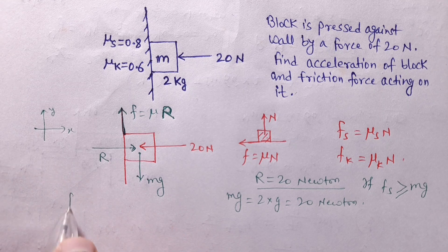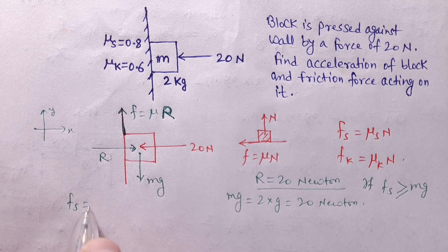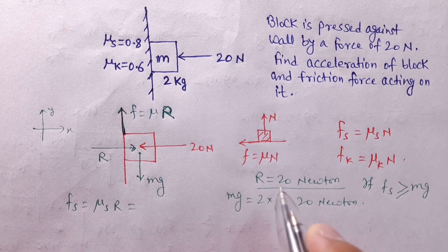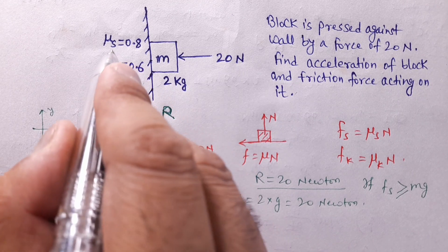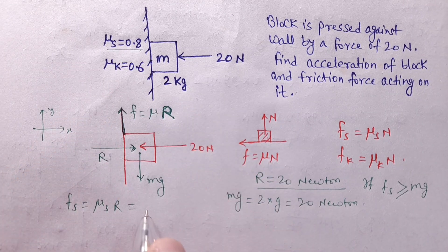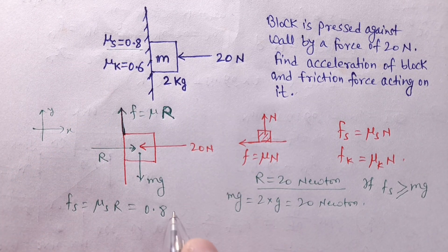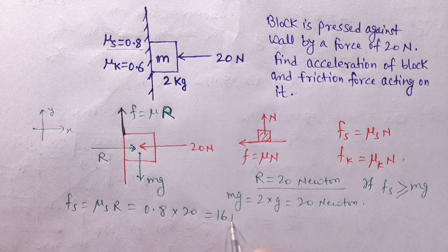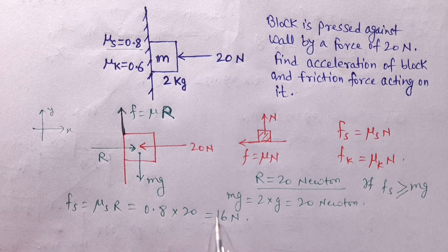Now for static friction: F_static = μ_static × R = 0.8 × R. With R = 20, F_static = 0.8 × 20 = 16 Newton.